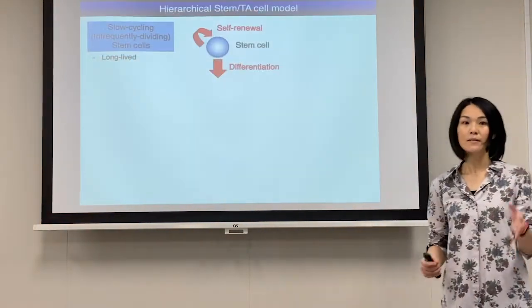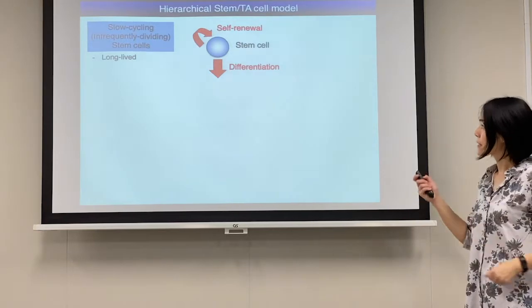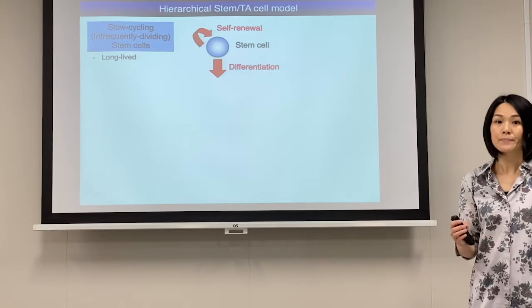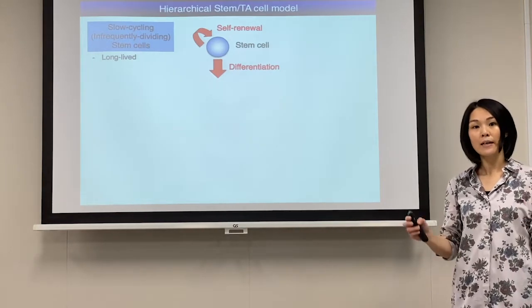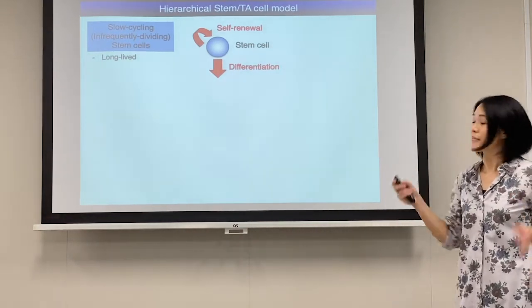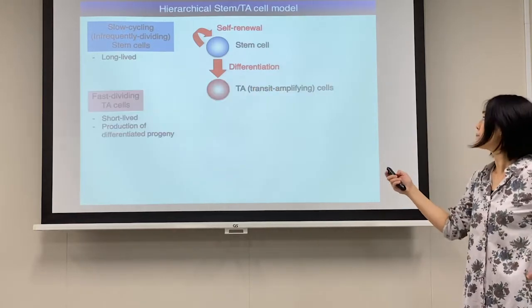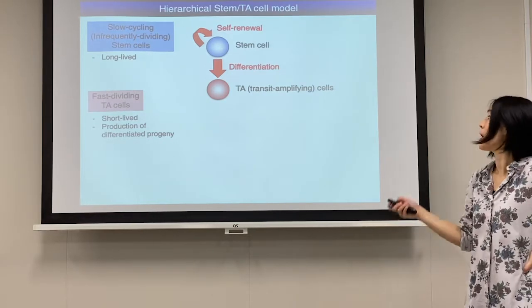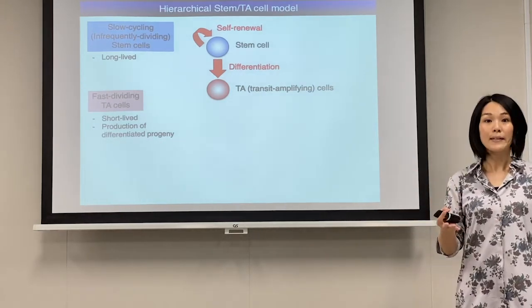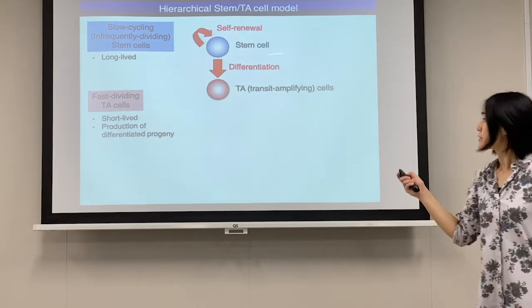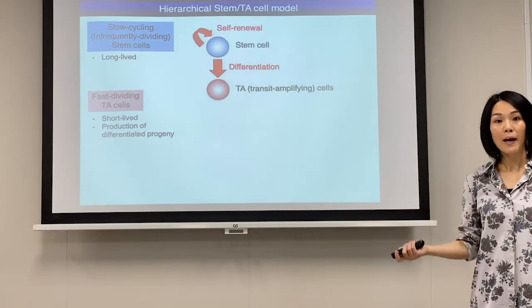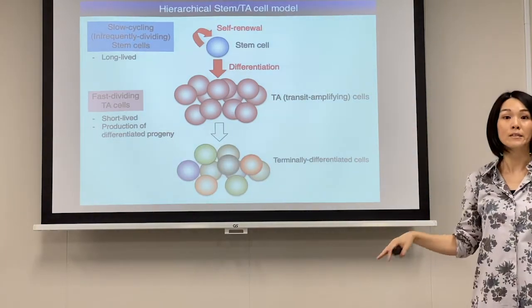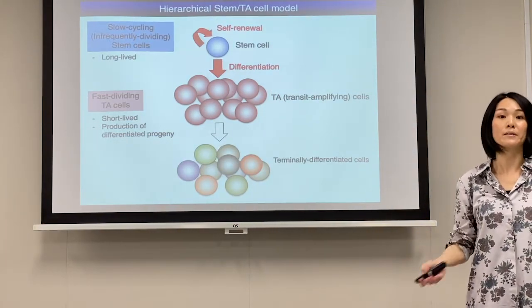In a classical stem cell model, those tissue stem cells are slow cycling or infrequently dividing in nature. Those slow cycling stem cells are placed at the top of the lineage hierarchy, and they give rise to fast dividing progenitor cells, called transit-amplifying cells, or TA cells. Those TA cells can divide rapidly and produce a lot of progeny that proceeds to terminal differentiation and contributes to tissue regeneration.